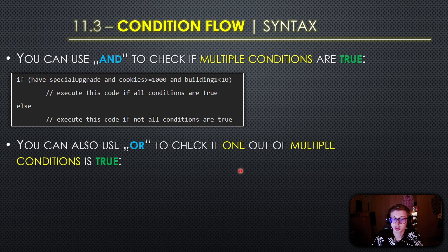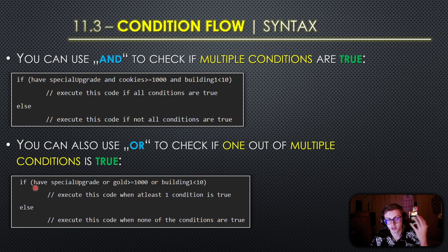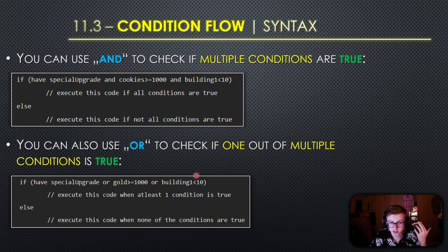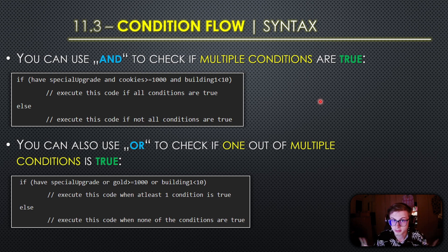You can also use the 'or' keyword to check if one out of multiple conditions is true. This snippet checks if you have a special upgrade, or if gold is greater than or equal to 1000, or if a building is less than 10 - if any of those are true, execute this code. Otherwise, if none of those conditions are true, not even one, execute the other code block.